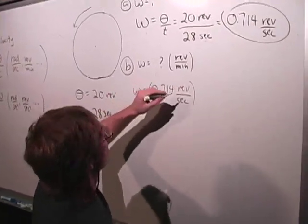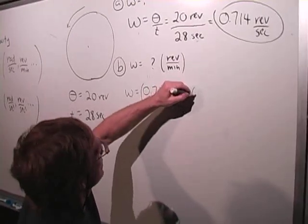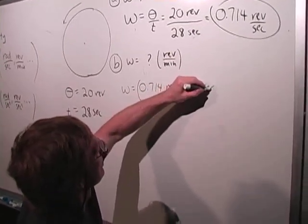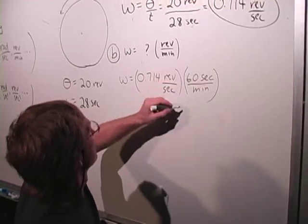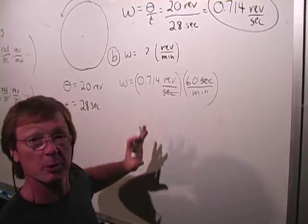Angular velocity is 0.714 revolutions per second. And that's times 60 seconds per minute. Seconds cancel. I get rev per minute, so I did it right.